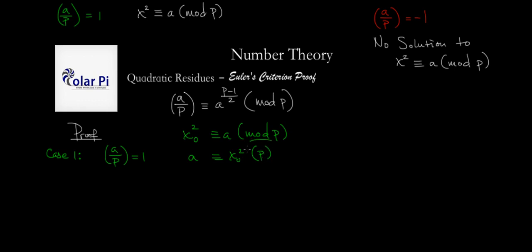By the way, instead of writing mod p each time, I'll use this shorthand notation from here on out — every time I write this symbol, I mean mod p. Now, what we're going to do is take a and raise it to the power of p minus 1 over 2. We note that this is the same thing as taking x₀ squared and raising it to the power of p minus 1 over 2.